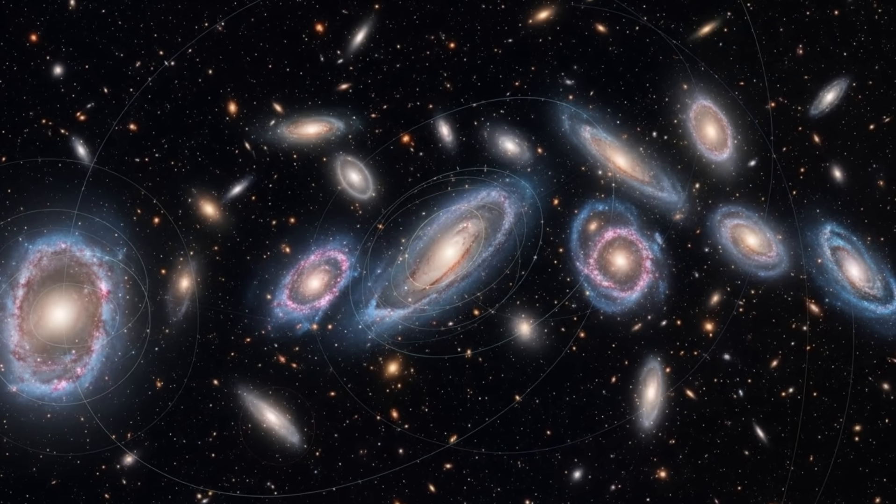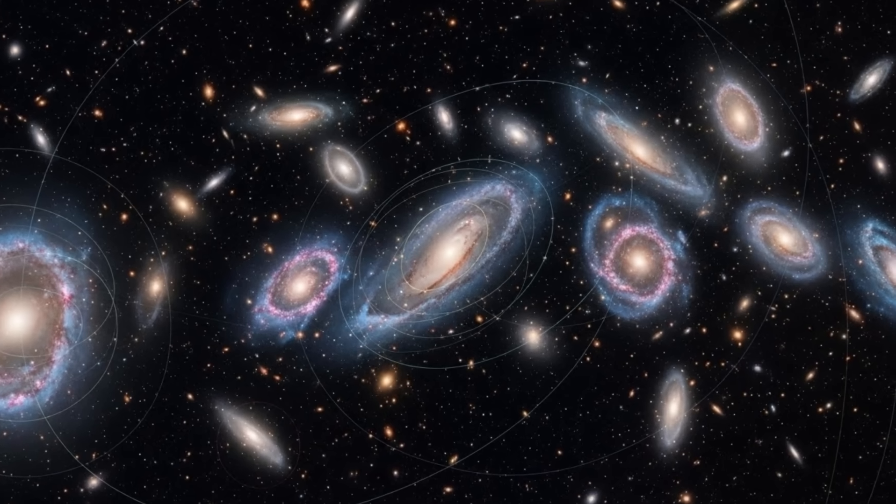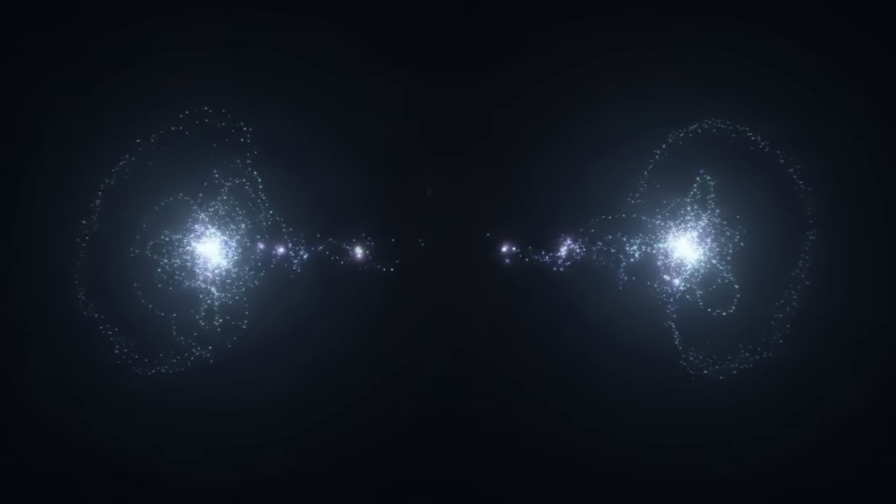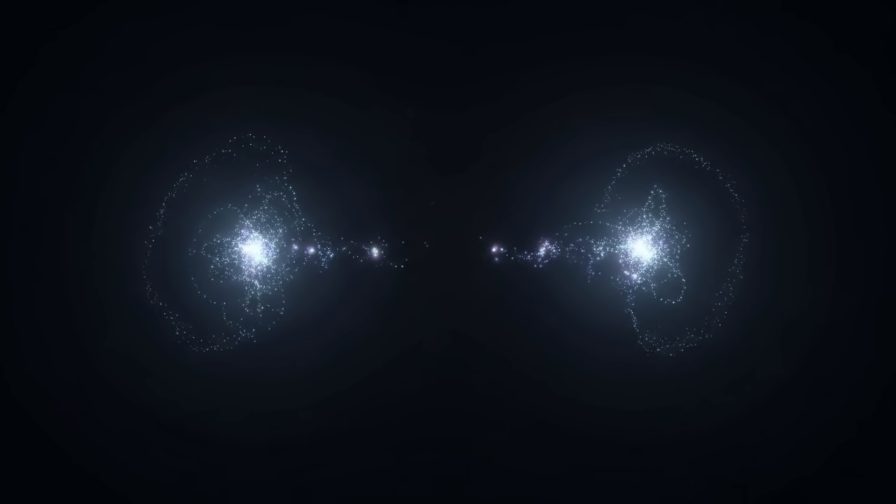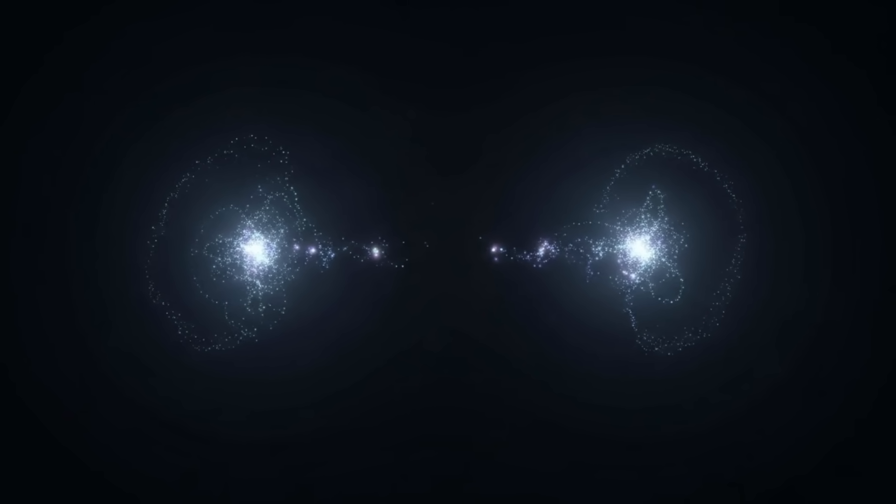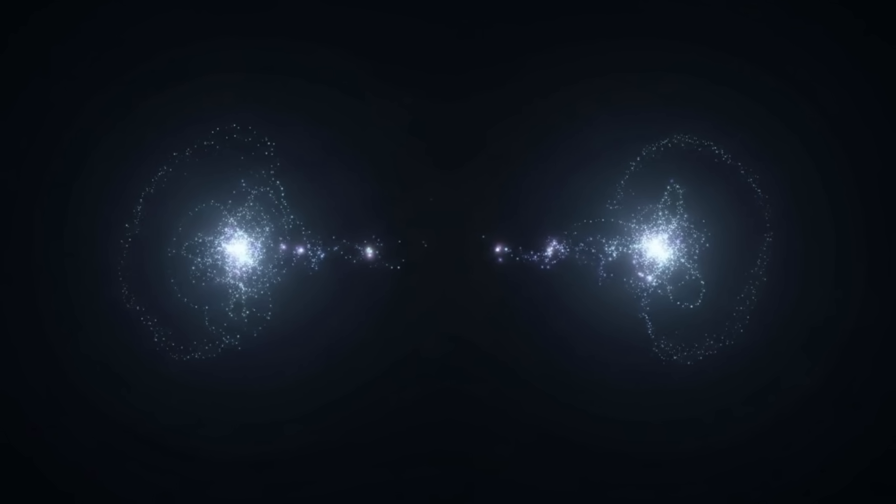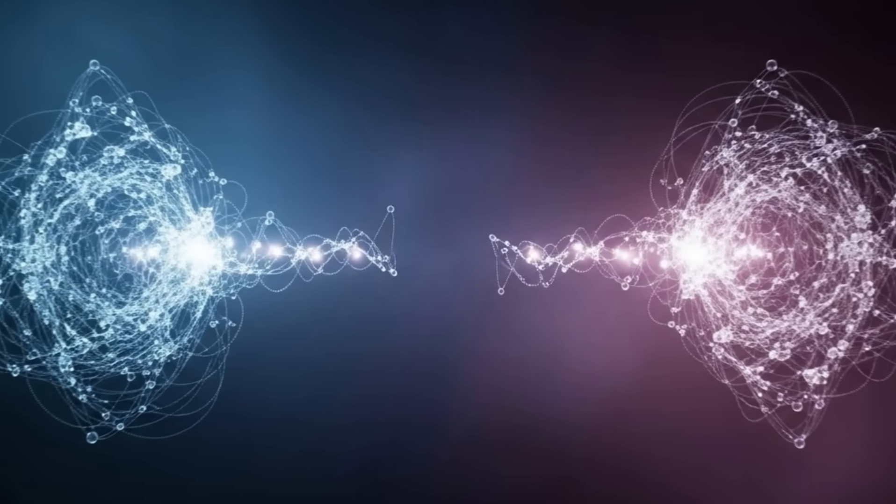NASA's James Webb Space Telescope is examining the oldest light in the universe, searching for patterns that could indicate space-time wasn't smooth in its earliest moments but textured, granular, lattice-like.